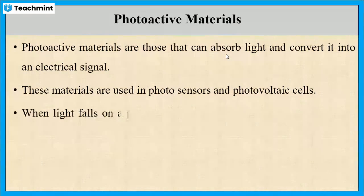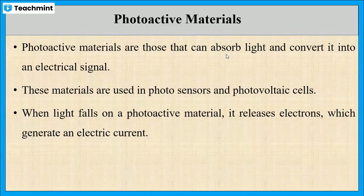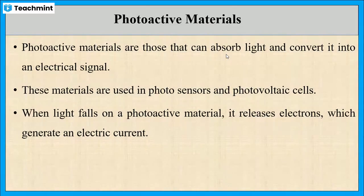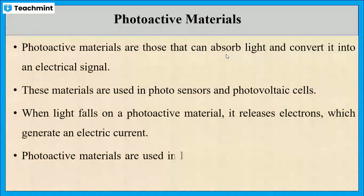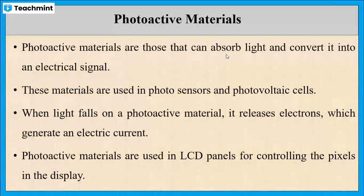In a PV cell, when light falls on the photoactive material, it knocks out electrons which generate an electric current. Photoactive materials are also used in LCD panels for controlling the pixels in the display.